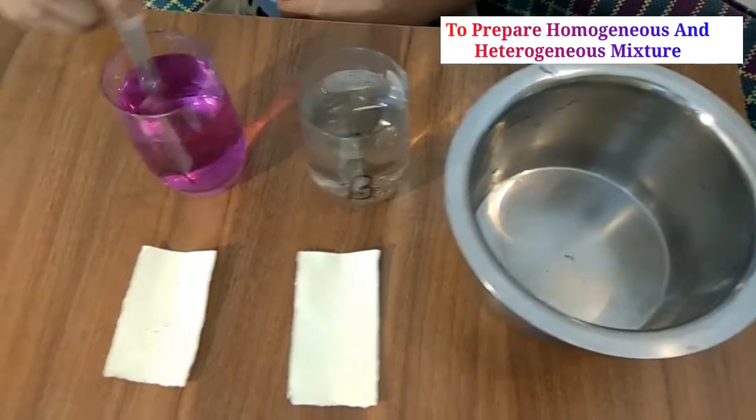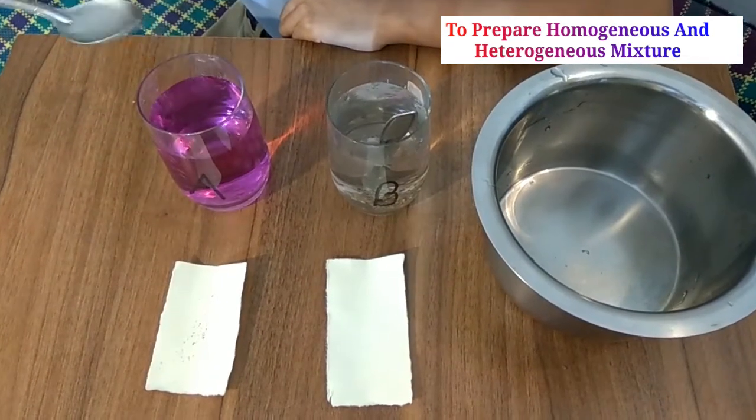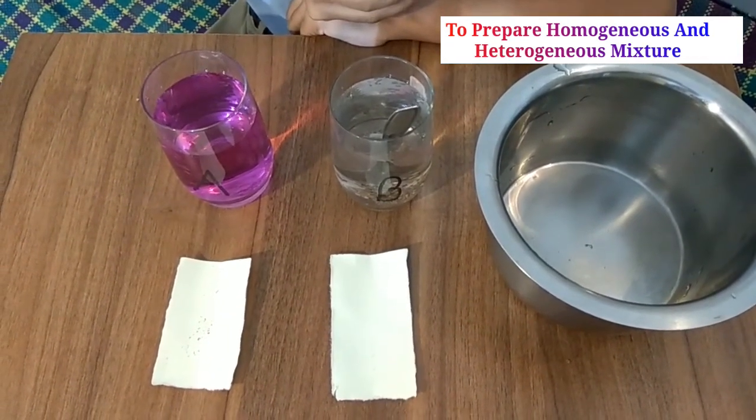Observe in glass A: the color of water is purple and the potassium is completely dissolved. That means the mixture of water and potassium is a homogeneous mixture.